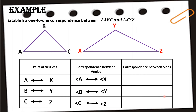Lastly, for the correspondence between sides. For sides, we need two letters to write each one. First side: line segment AB corresponds to side XY.